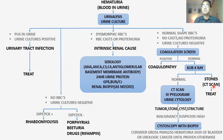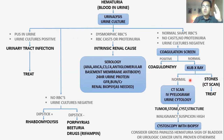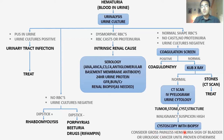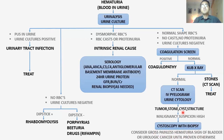For stones the gold standard test is CT scan. If KUB is normal, go for CT scan, IV pyelogram, and urine cytology — which helps catch abnormal tumor cells, strictures, and missed stones. Whenever suspicion of malignancy is high — even if urine cytology is negative — and the patient is an older person with painless hematuria, go straight for cystoscopy and biopsy, as painless hematuria is a sign of bladder and urologic cancer until proven otherwise.